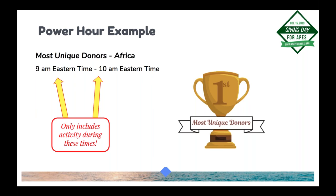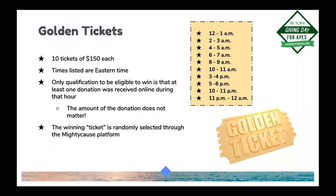Shortly after 10 a.m., the winner of that power hour would be announced. Importantly, donors who have already given prior to the power hour can donate again during the power hour and be counted as a unique donor, because MightyCause only looks at activity within the power hour window. So if a donor made multiple donations beforehand, they can still be counted once as a unique donor to help you win the prize.